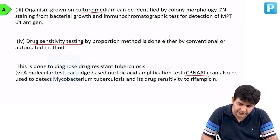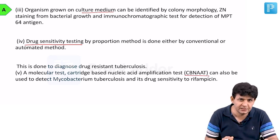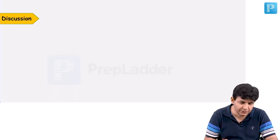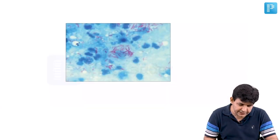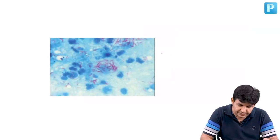CBNAAT (also known as GeneXpert MTB/RIF) can also be used, and it can detect rifampicin resistance as well. All these things can be associated with this clinical picture.